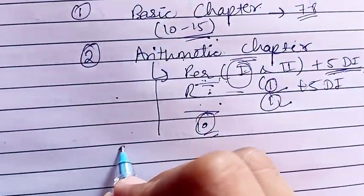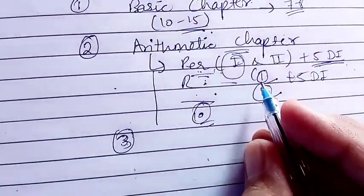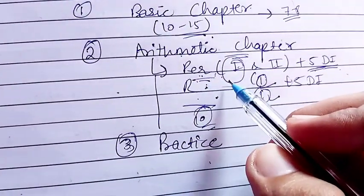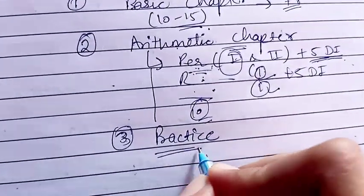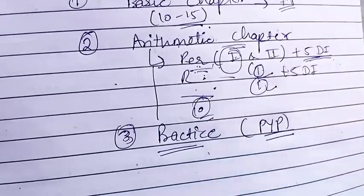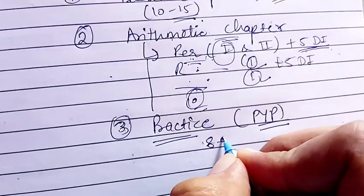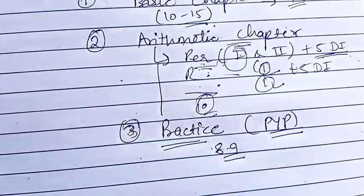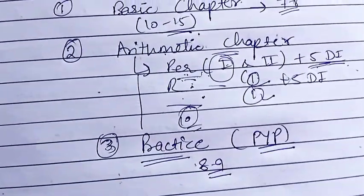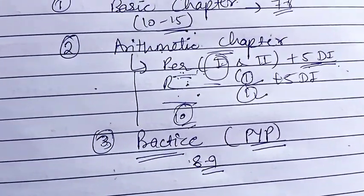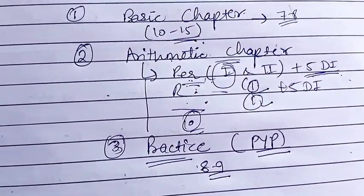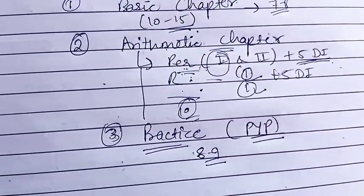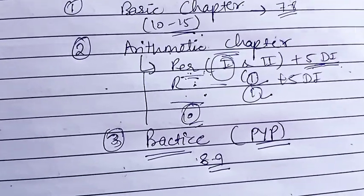After completing arithmetic chapters, you should practice questions from previous year papers — chapter-wise, at least eight to nine previous year papers. When we see a difficult question in a mock test, it decreases our confidence. But when we solve previous year papers, they are easier and will help you build confidence in what you have studied.